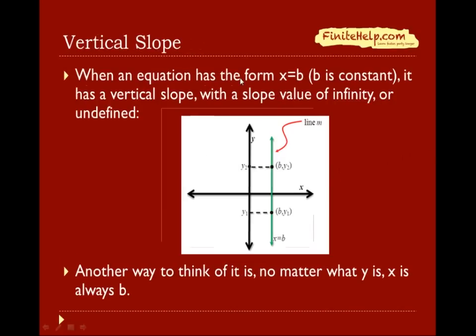The other special case is the vertical slope. The vertical slope is going to have the form x equals b, where b is a constant. Here, y is not present. So no matter what y is, x is always going to be b. Here, you can see, it's a vertical slope. And the slope value is considered to be infinity or undefined.